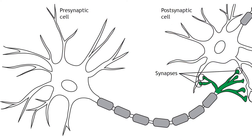For the nervous system to function, neurons must be able to communicate with each other, and they do this through structures called synapses. At the synapse, the terminal of a presynaptic cell comes into close contact with the cell membrane of a postsynaptic neuron.